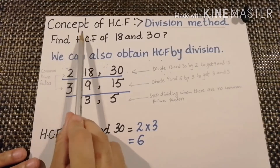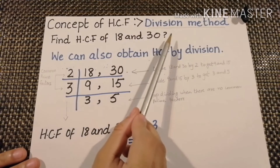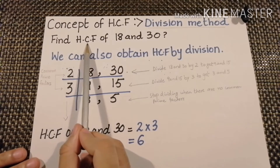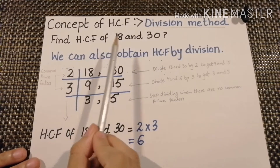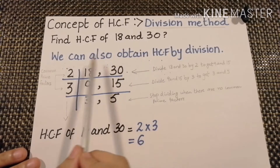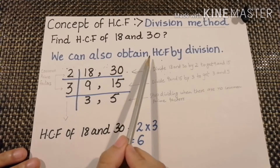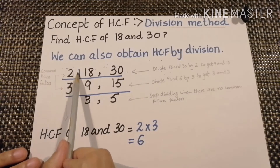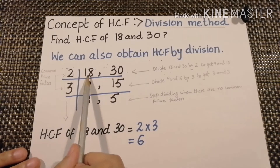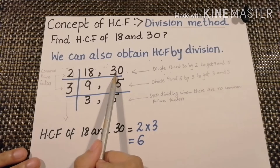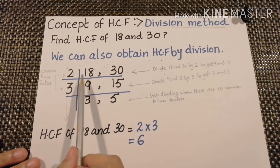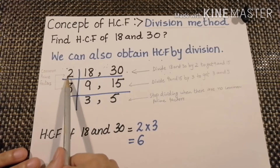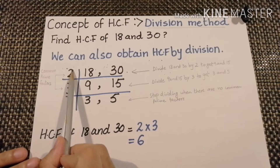Now the concept of HCF by division method. Find the highest common factor of 18 and 30. We can also obtain HCF by division method. We will write the values 18 and 30 in this form and divide both values by a common factor — let's say 2.